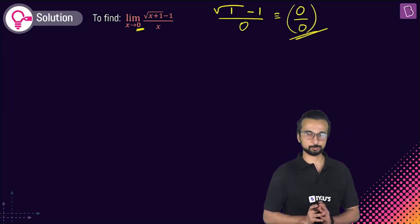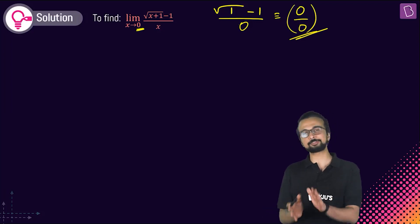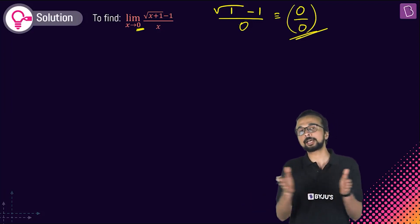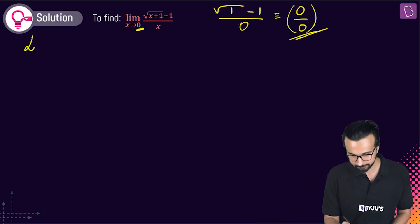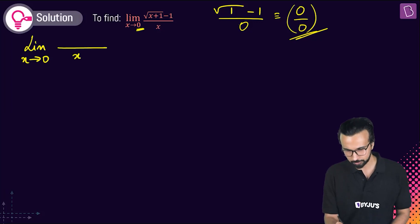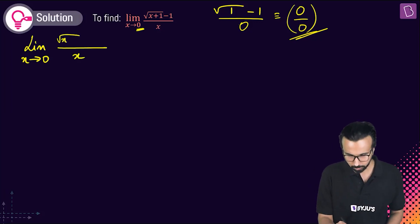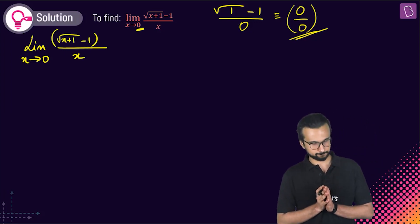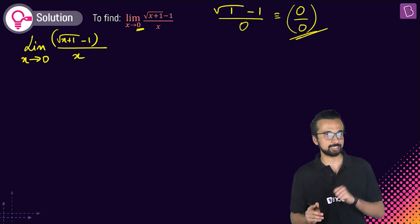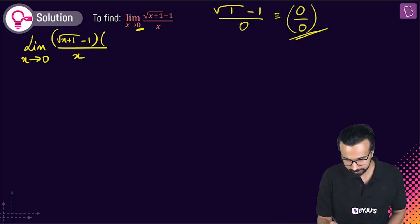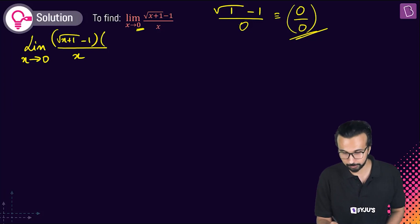We have to do something to get rid of the zero by zero and unmask the actual answer. So we have limit x tends to zero, numerator is root of (x+1) minus 1, denominator is x. What we'll do here is rationalize.